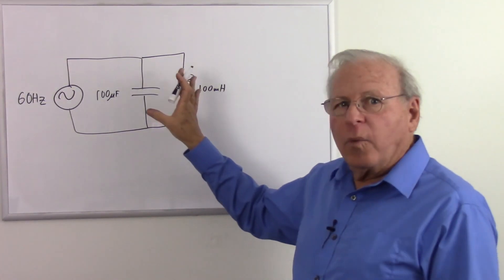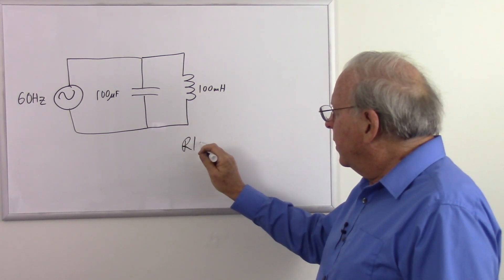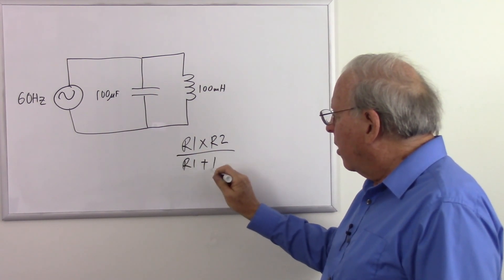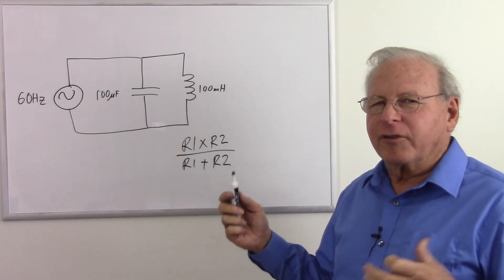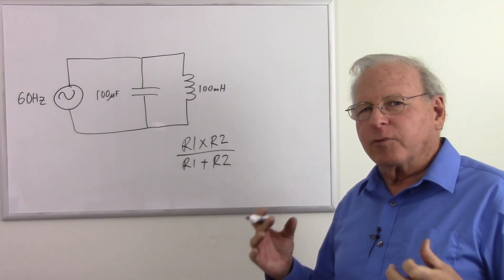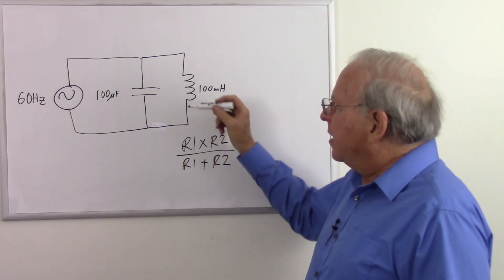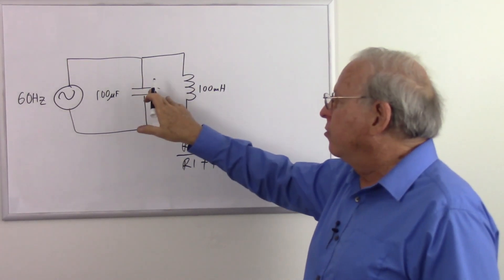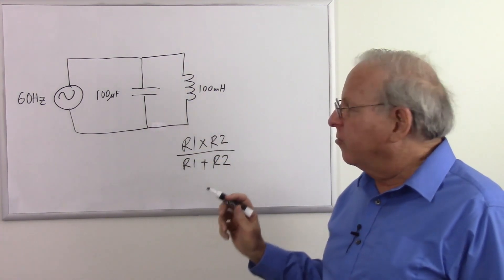Since they're in parallel, we have to use the parallel formula, which for resistors is R1 times R2 divided by R1 plus R2. This is the product-over-sum method. There's also the reciprocal of the sum of the reciprocals method, which is: one over the total resistance equals one over R1 plus one over R2 plus one over R3, etc. But the product-over-sum is a little simpler to use, and we never need anything else because if we have multiple components we can just lump them together. For example, if we have two capacitors, we can calculate them together as a single capacitor and go back to this formula.